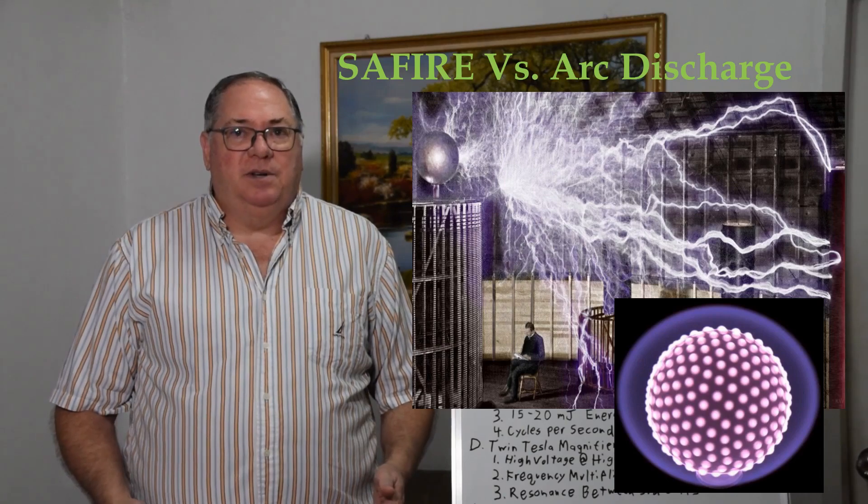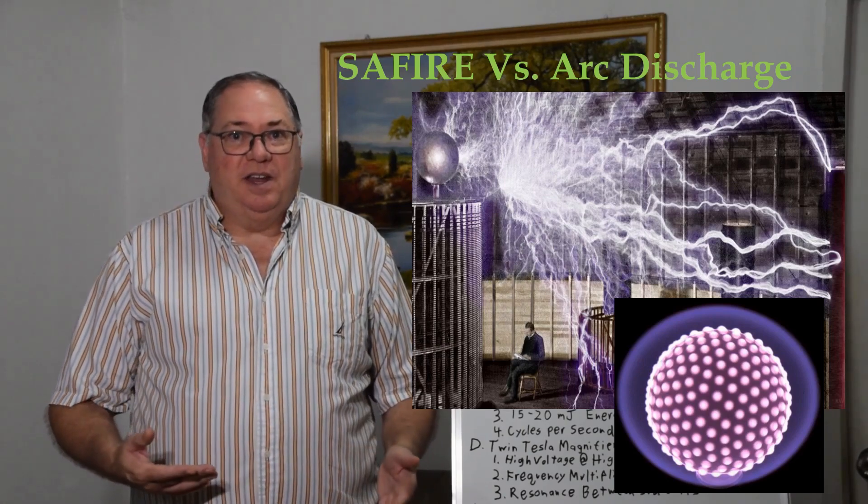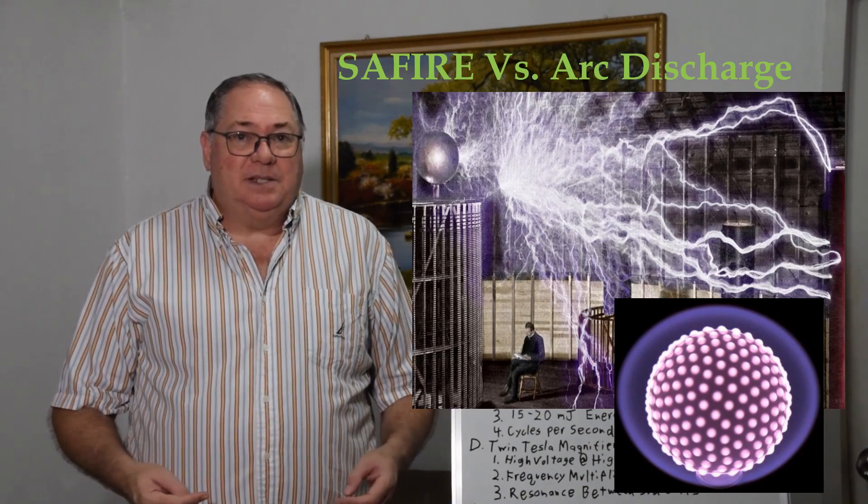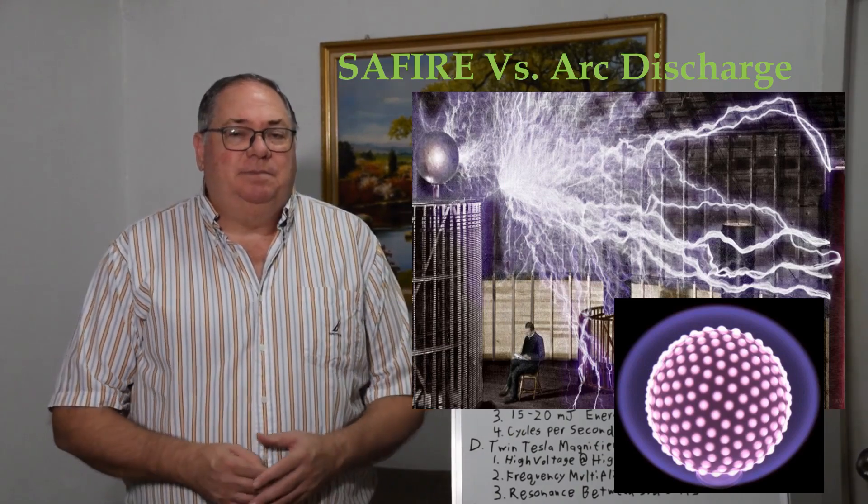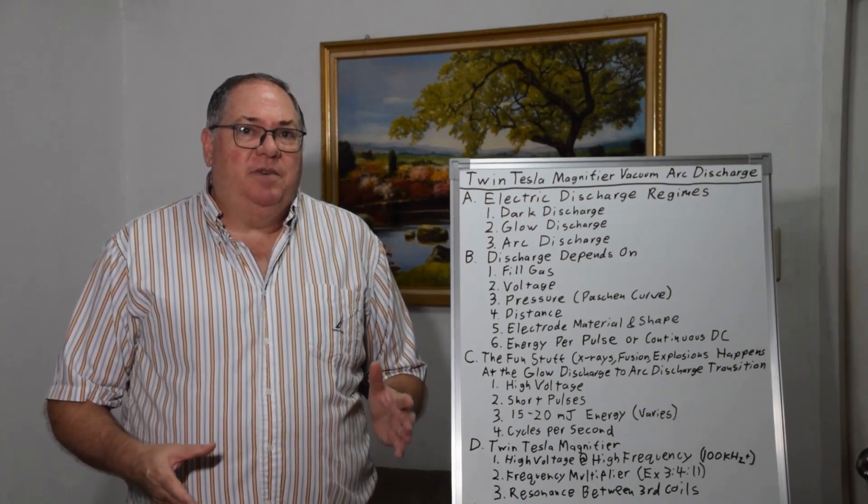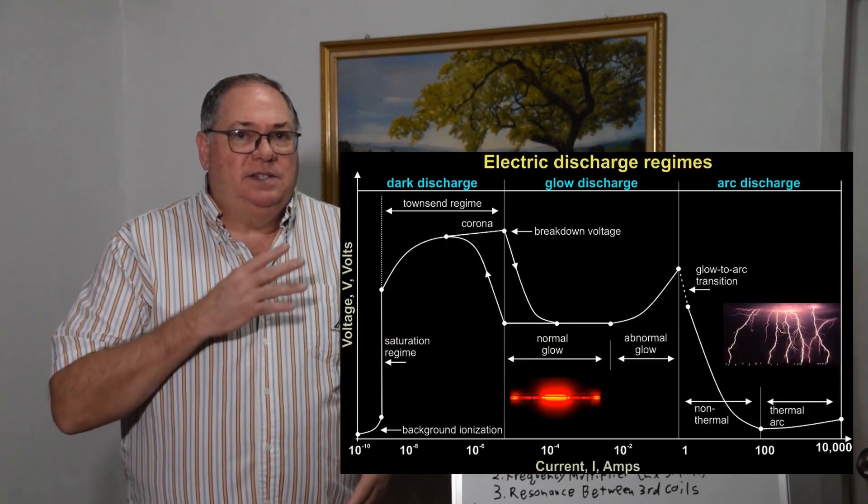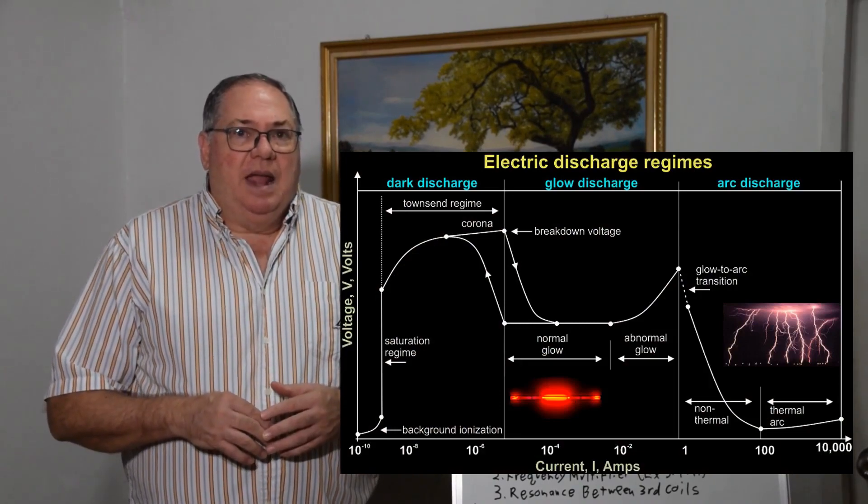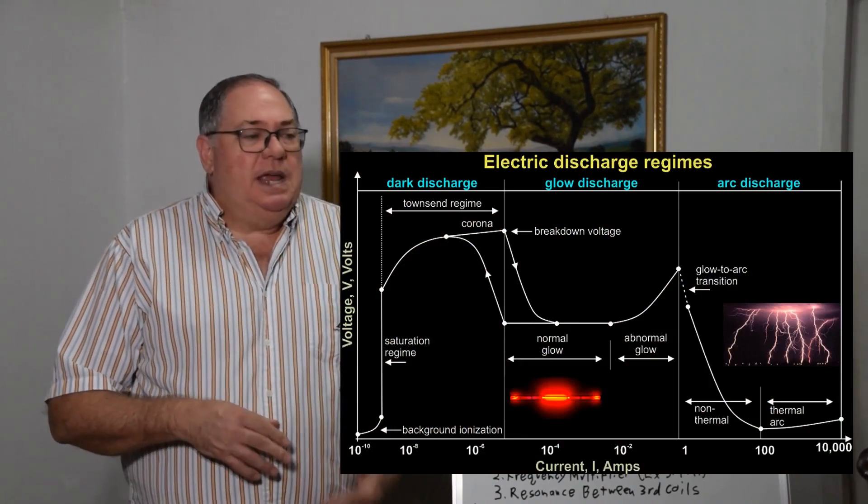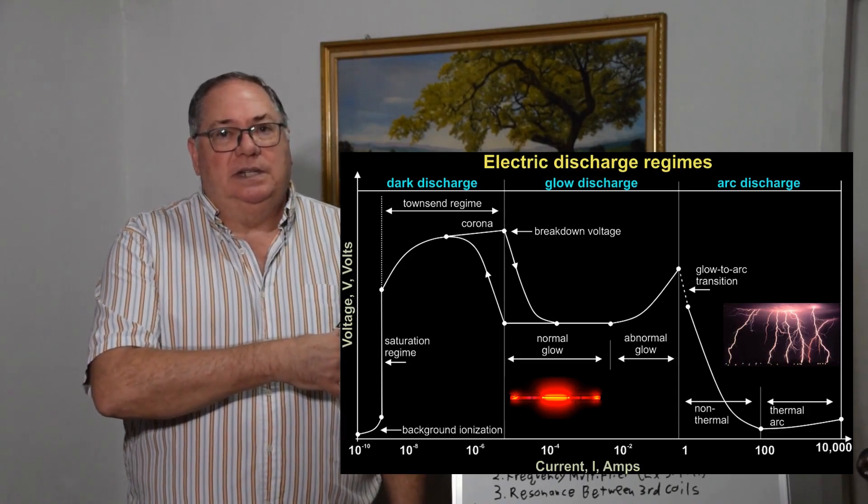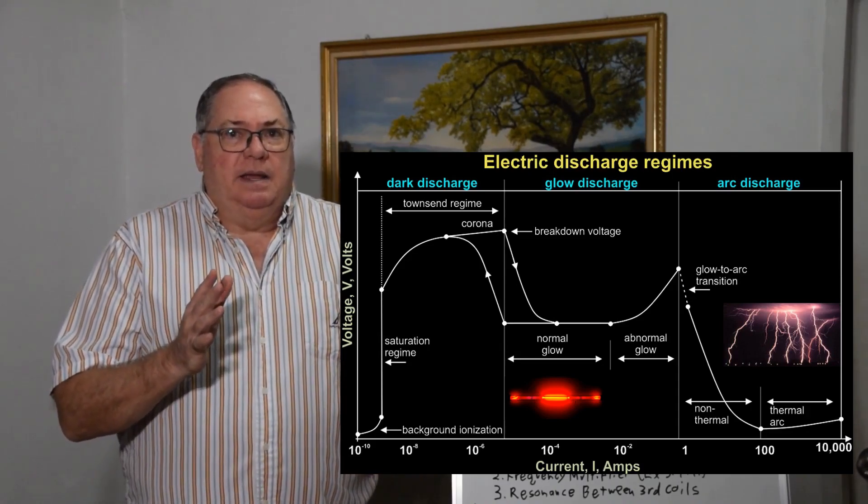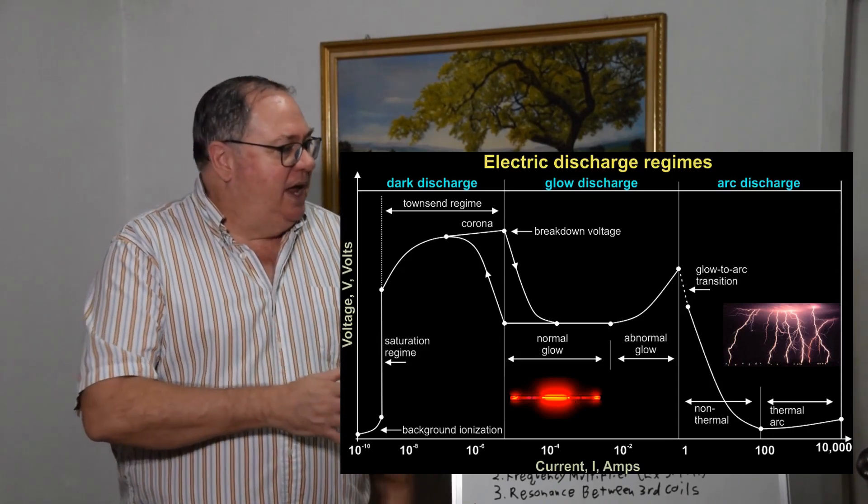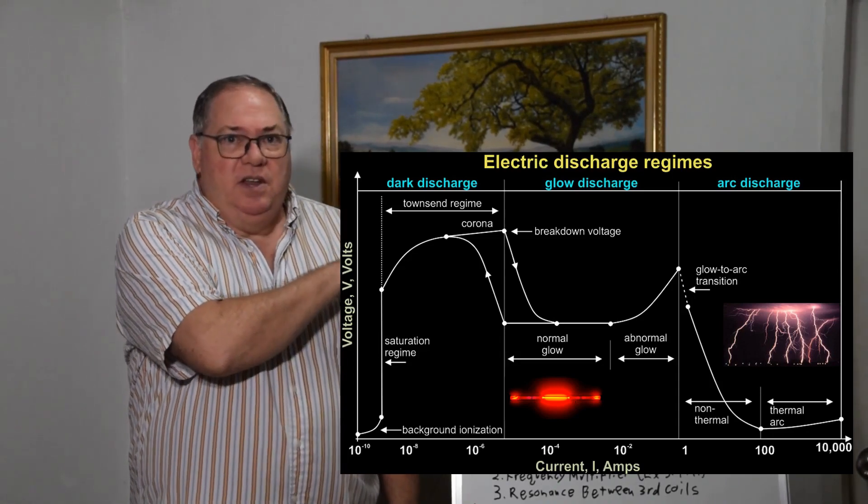First, you can look at this arc discharge chart. There are several different regimes. At really low voltage, if you have an arc path it behaves like a capacitor, and then once you get saturation you get a dark discharge regime.